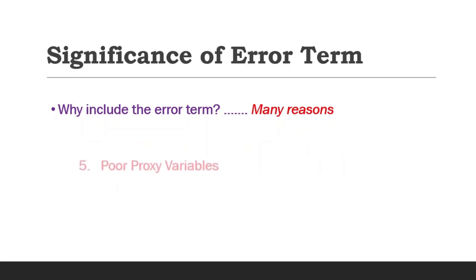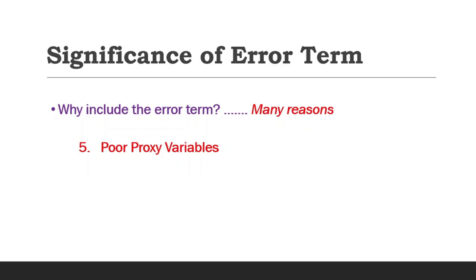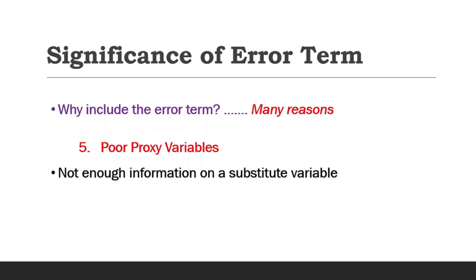The fifth point is poor proxy variables. Oftentimes, there might not be enough information on a particular variable to be measured in a model. For instance, there is no specific data on poverty, so we might want to use income as a proxy where a threshold is defined, and all who lie below this threshold are considered poor. If income used as a proxy for poverty is actually a poor proxy variable, then there will be serious implications for estimation, and hence the u parameter is used as a substitute.